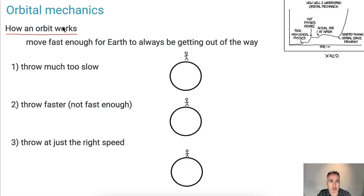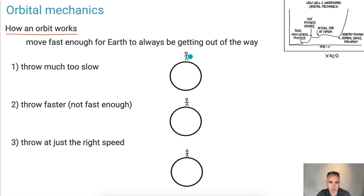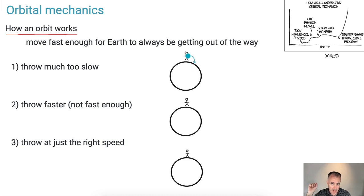Let's talk about how orbits actually work. The idea behind it is really that you just need to be — in order to orbit — you can think about this as almost like throwing an object. So let's say I'm here and I throw an object. We're going to have this view where I'm really big compared to the planet. Let's say I throw an object and it might just land on the ground. If I just throw it, it just goes down, because gravity is always acting on this object. Even if I give it a forward velocity, it still falls down with gravity.